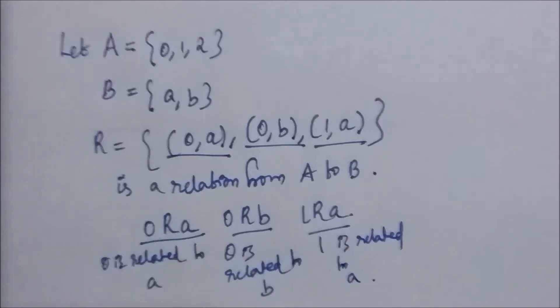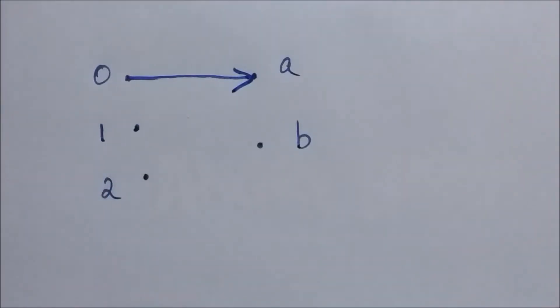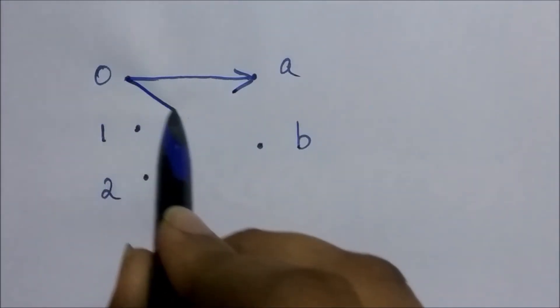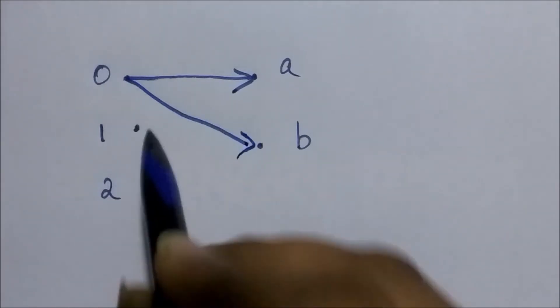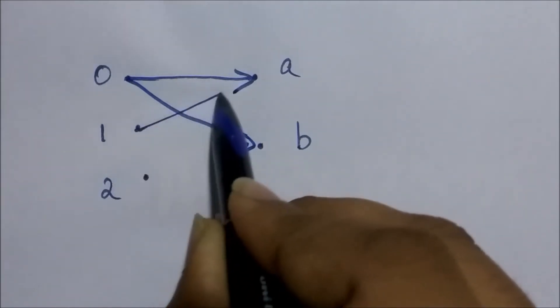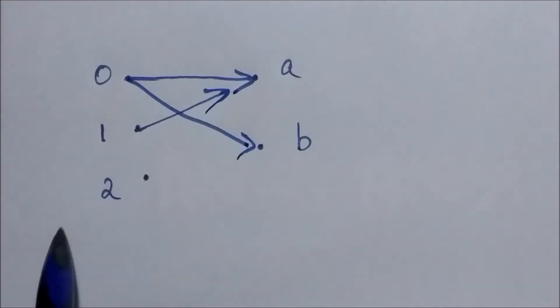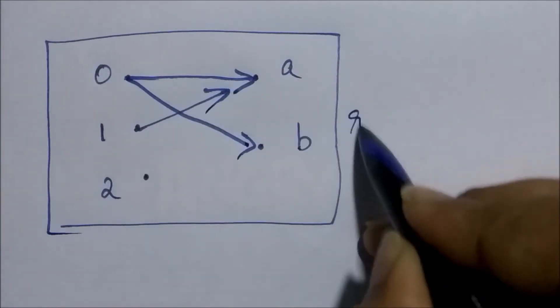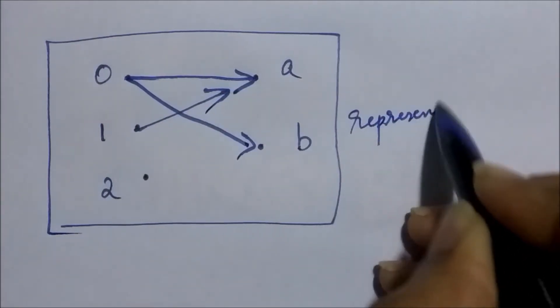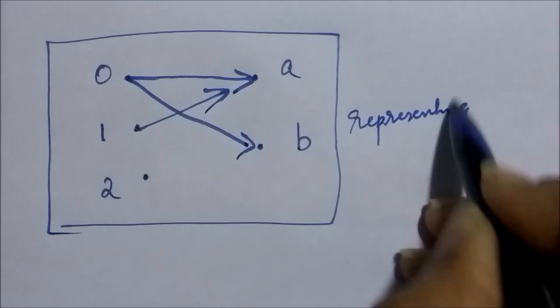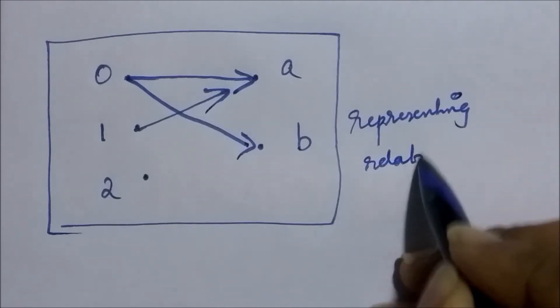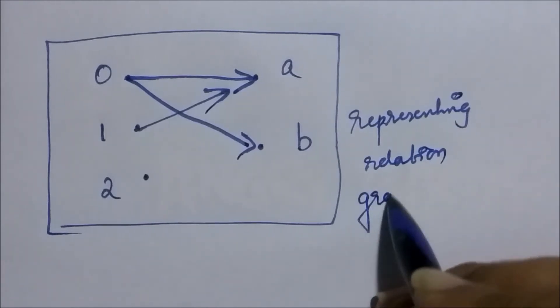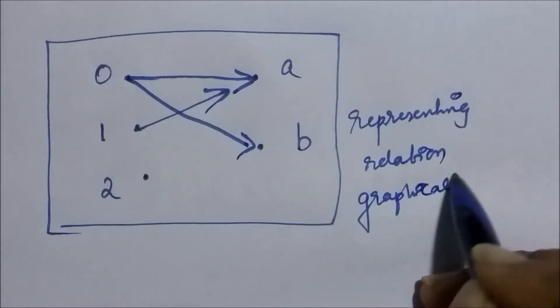A relation can also be represented graphically. Taking the previous example where set A equals {0, 1, 2} and set B equals {a, b}, the relation from set A to set B contained the ordered pairs (0,a), (0,b), and (1,a). So 0 is mapped to a, 0 is also mapped to b, and 1 is mapped to a. This is how we represent a relation graphically.